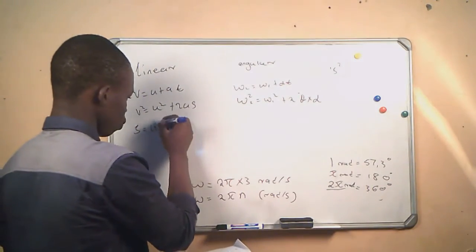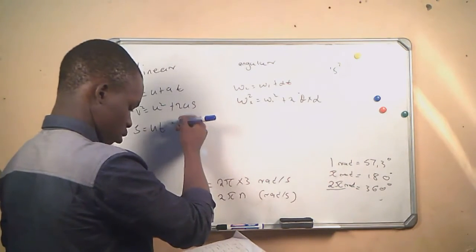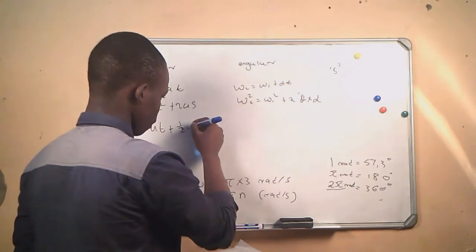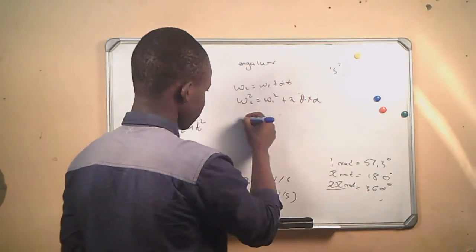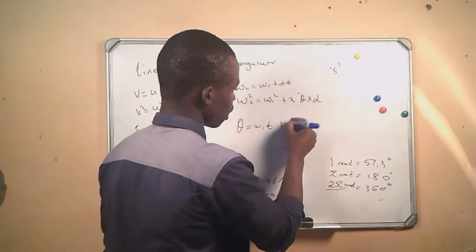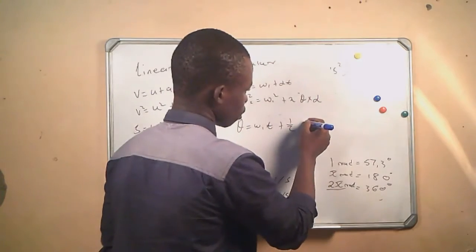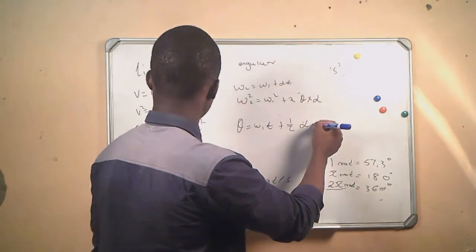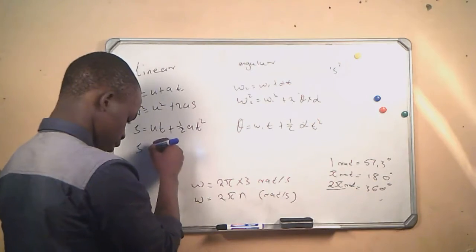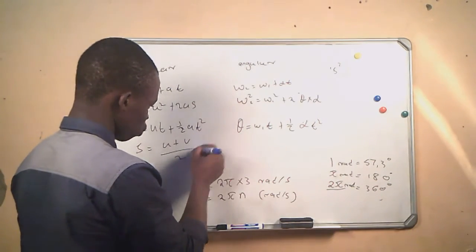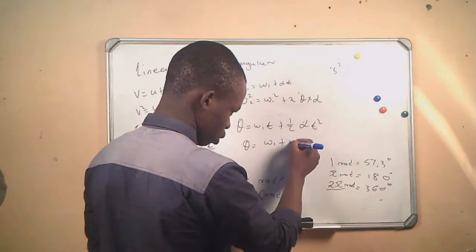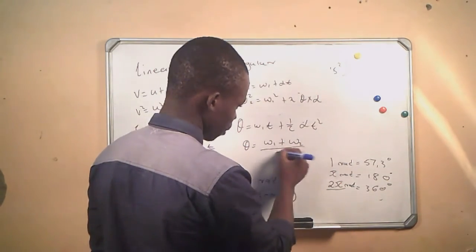The linear formula s = ut + ½at² becomes θ = ω₁t + ½αt² in angular form. The final formula, s = (u + v)/2 × t, becomes θ = (ω₁ + ω₂)/2 × t in angular form.